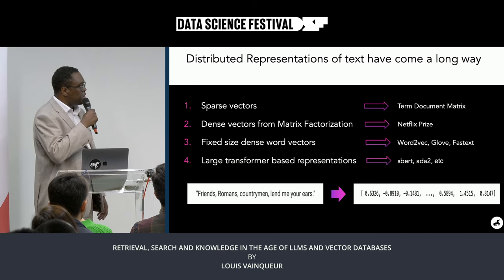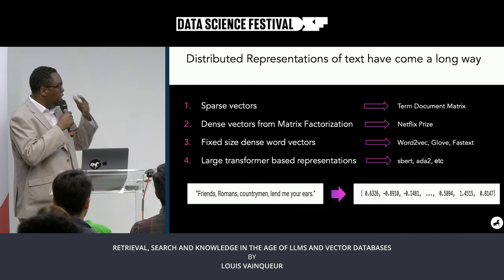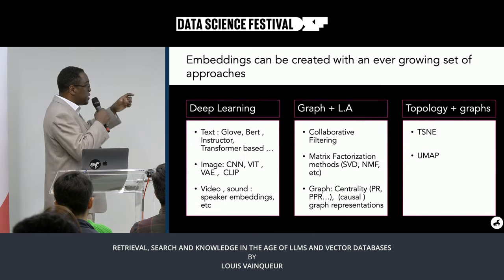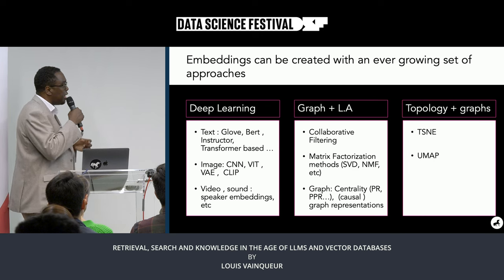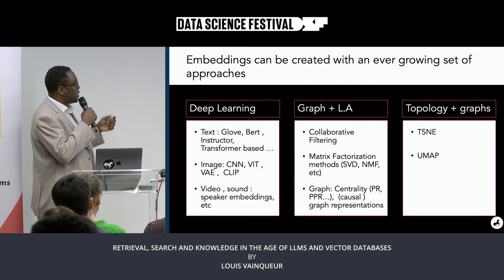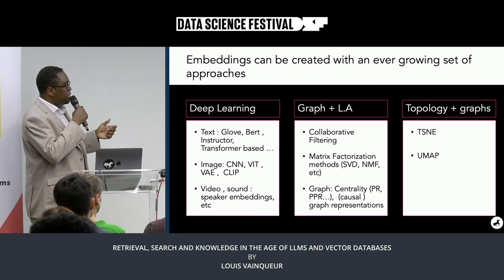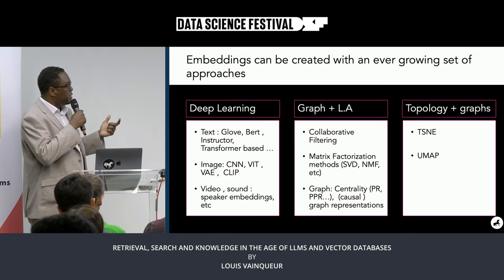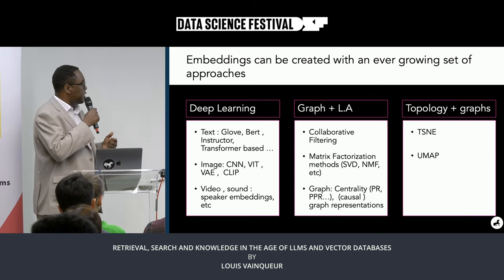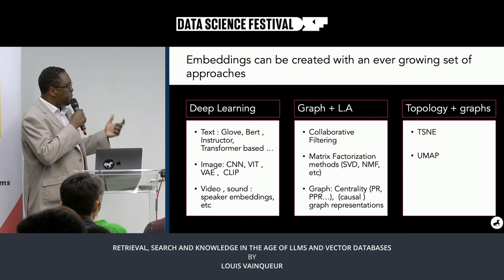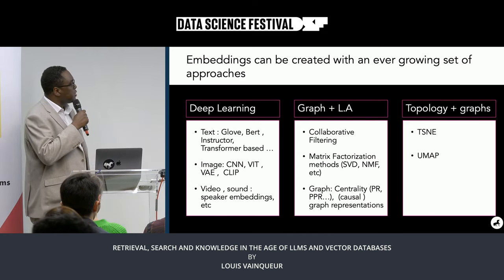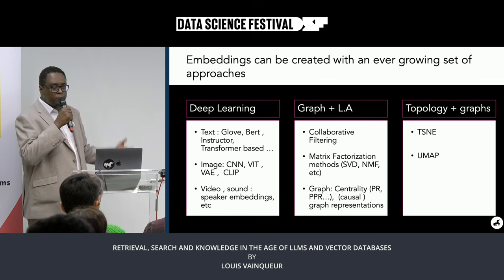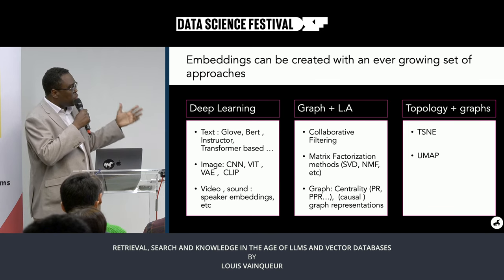This summarizes the different types of embeddings. You can have embeddings based on deep learning models like GloVe and BERT, embeddings created for images like CLIP and ViT, and you can also embed video or sound. In the graph column, you have collaborative filtering — the Netflix prize was one implementation — which from a mathematical point of view was a matrix factorization, decomposing a matrix of user ratings into one matrix of users and one matrix of items.